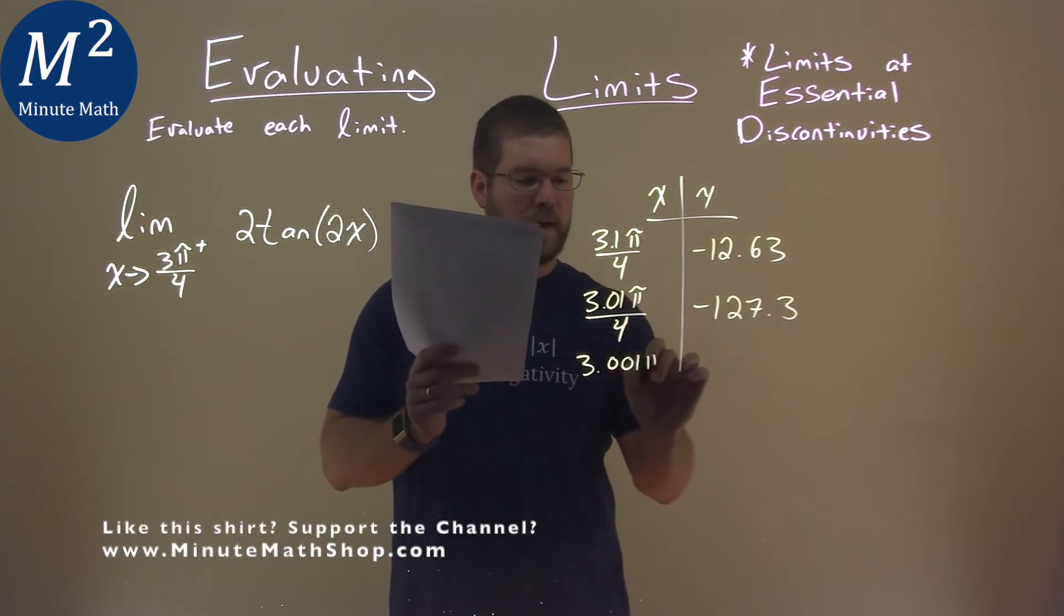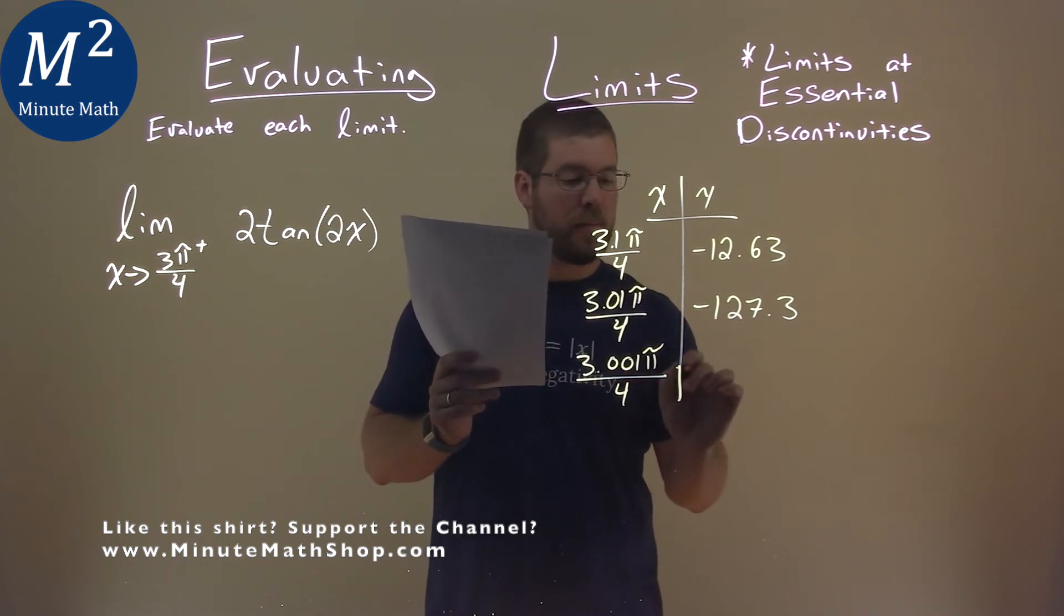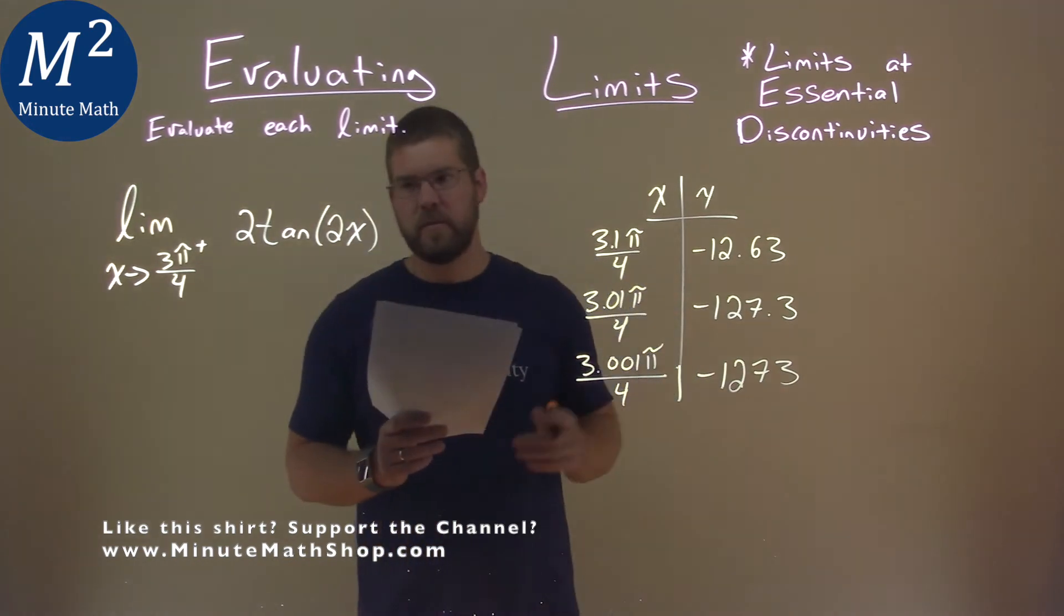3.001π/4. And again, that's an approximate value of negative 1,273. And that's a rounded approximate.